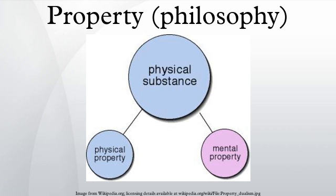Property dualism describes a category of positions in the philosophy of mind which hold that, although the world is constituted of just one kind of substance — the physical kind — there exist two distinct kinds of properties: physical properties and mental properties. In other words, it is the view that non-physical, mental properties inhere in some physical substances.